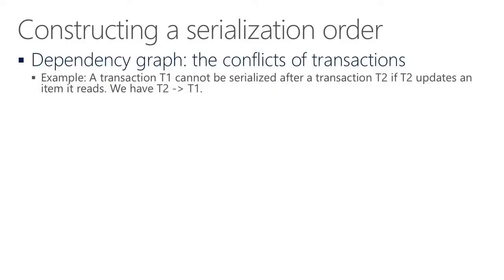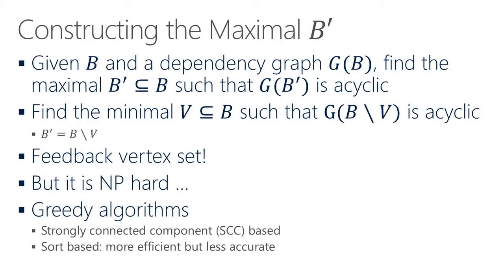There is a way to decide when B prime is serializable and an algorithm to construct a serialization order — this involves the dependency graph and whether there are cycles in it. After identifying this problem, the question is how to remove the least number of transactions from the dependency graph to make the graph acyclic. Unfortunately, this is NP-hard. So we propose greedy algorithms that allow a design trade-off between the overhead of the algorithm and its performance.